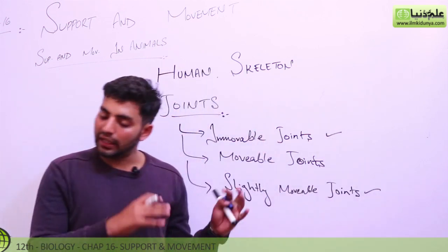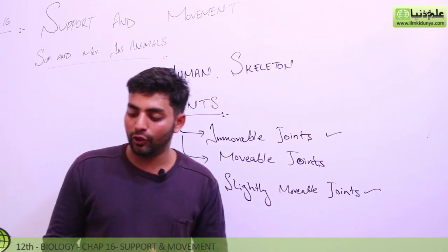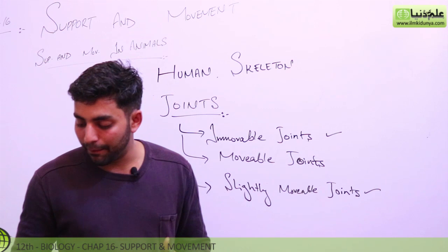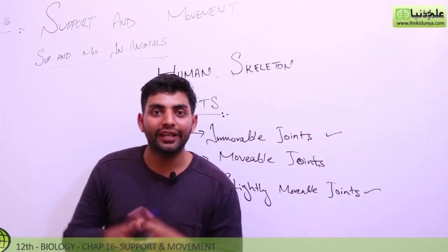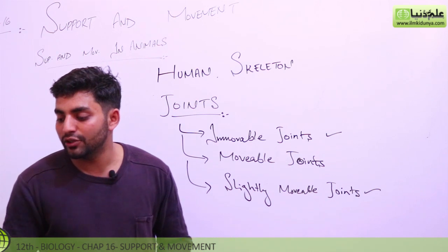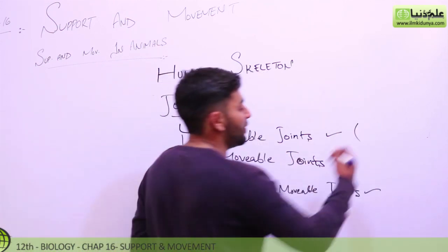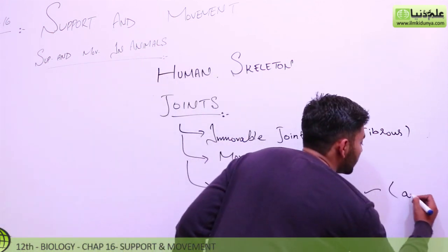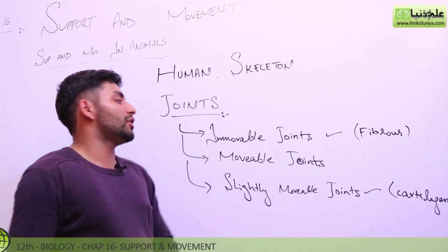We will first discuss immovable joints and slightly movable joints. Immovable joints are fixed — they are not moving. These are fixed joints. For example, like the ones you know — all parts are fixed. Cartilage joints are slightly movable joints — in the textbook they are named fibrous joints. Slightly movable joints are about cartilage joints.